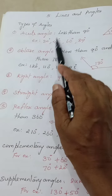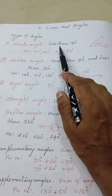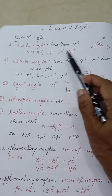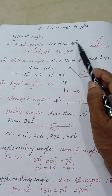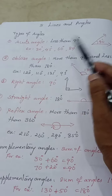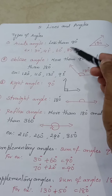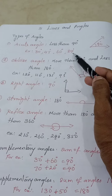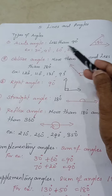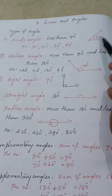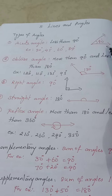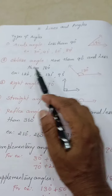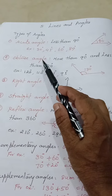The first type is acute angle. An acute angle is the angle which is less than 90 degrees. For example, 30, 45, 60, 89 — till 89 degrees it is acute only. The angle will be forming like this.